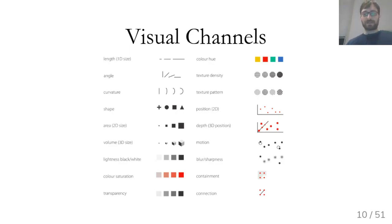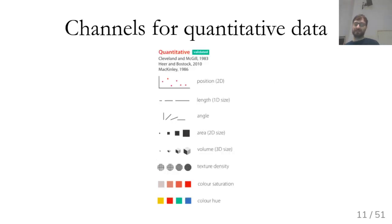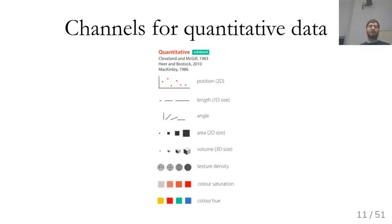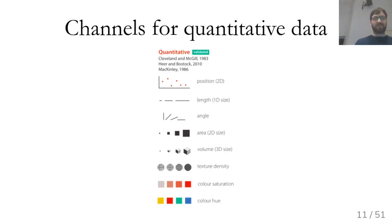One thing to keep in mind, in particular for quantitative — meaning continuous — data, is that there's a pretty clear hierarchy of these channels. Several works have studied how human perception works. Position is by far the strongest cue; comparing position is much easier than anything else. The second is length, third is angle, and fourth is area.